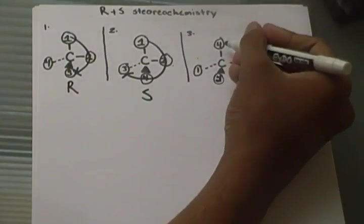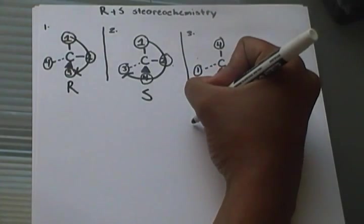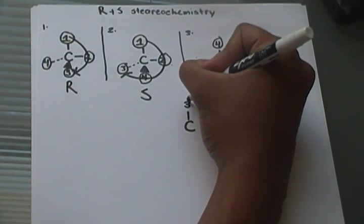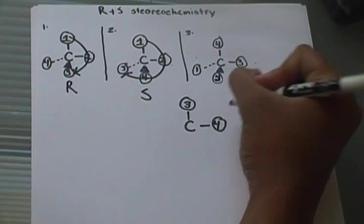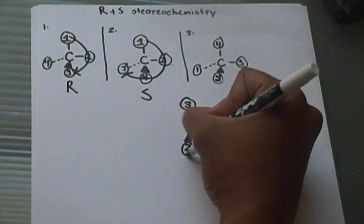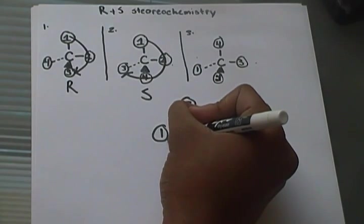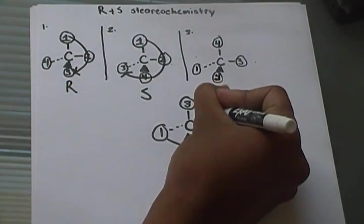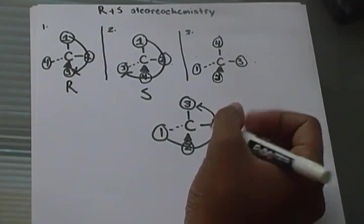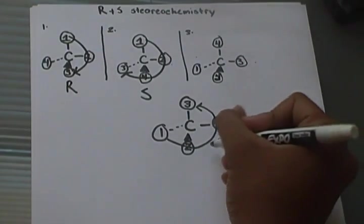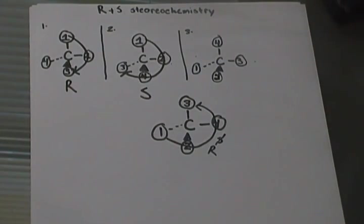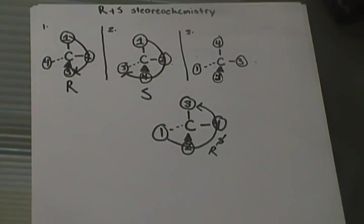Our fourth group is up here. I'm going to switch it with the third group that's going into the plane. So I'll put the third group up here, keep the fourth group over here, have the second group coming out, and the first group going back. Now I draw my curved line — one, two, three — that would be S. But then I have to switch it, and it would be R. That's known as the single swap method. Remember to always switch that fourth group that's in the plane with the other group that's in the plane or going into the page — don't switch it with the one that's coming out, because that will not work all the time.